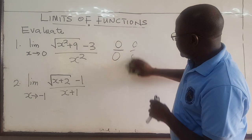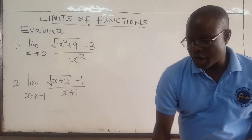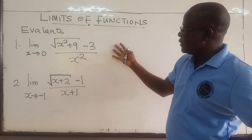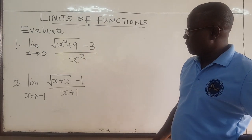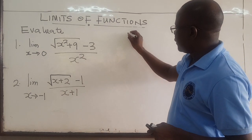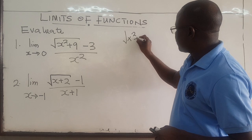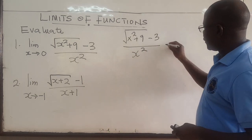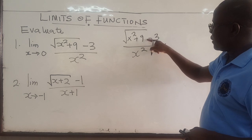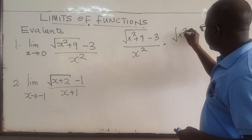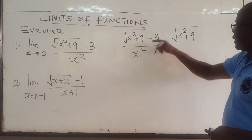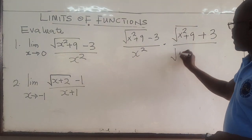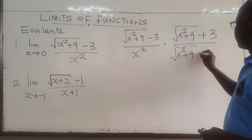When that happens, the easiest thing to do is to rationalize and put this in a form where the indeterminate nature of the expression goes away. So we'll rationalize: we take the square root of x squared plus 9 minus 3, all over x squared. To rationalize it, we multiply by the conjugate — the same expression but with plus instead of minus — so we have square root of x squared plus 9 plus 3, divided by the same thing, retaining the same expression.